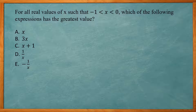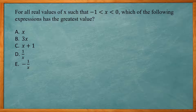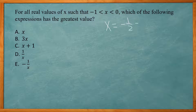This one reads: for all real values of x such that negative 1 is less than x, which is less than 0 — or x is between negative 1 and 0 — which of the following expressions has the greatest value? So I'm going to choose a value for x in between there. The easiest would be negative 0.5.